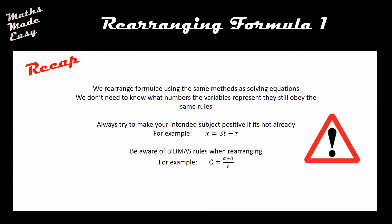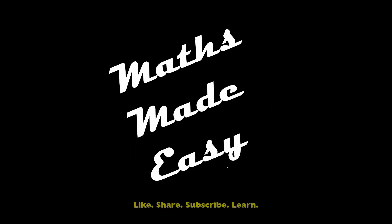So just to recap: we rearrange formula using exactly the same methods as solving equations. Always try to make your intended subject positive if it's not already — if R were negative you'd need to deal with that first. And remember to be aware of BIDMAS rules when rearranging — for example, if a variable is trapped in a fraction, multiply both sides by the denominator first before accessing other terms. Thanks for watching. There will be a follow-up video on rearranging formula two, intended for higher tier students only. Hope you found this useful — don't forget to like, share and subscribe.